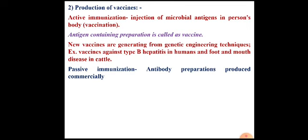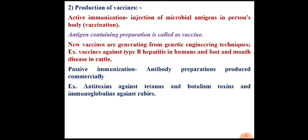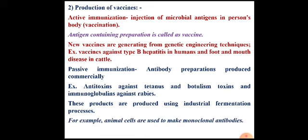Another type of vaccine is useful for passive immunization. Vaccines containing antibodies are agents for passive immunization. In the current corona situation, there is a therapy called plasma therapy, which is related to passive immunization. Passive immunization involves anti-toxins — antibodies against tetanus disease, botulinum toxin, and rabies disease. All these products are produced by industrial fermentation processes — for example, animal cells are used to make monoclonal antibodies.